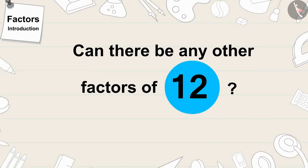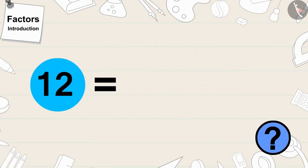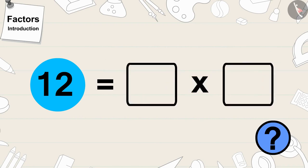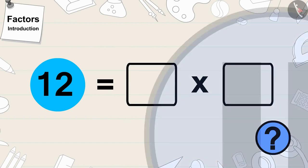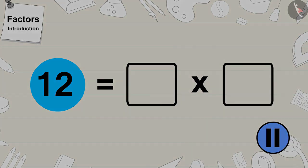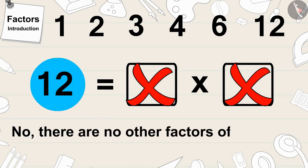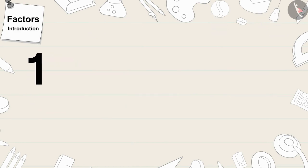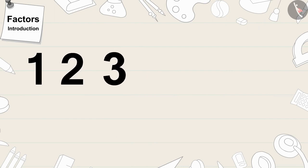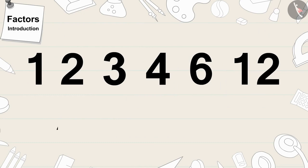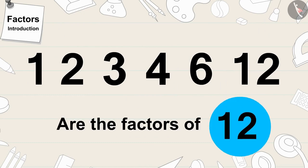Children, can there be any other factors of 12? Can we write 12 as a product of any other numbers? If you want, you can stop the video and think about the answer. No, there are no other factors of 12. The numbers 1, 2, 3, 4, 6, and 12 are all the factors of 12.